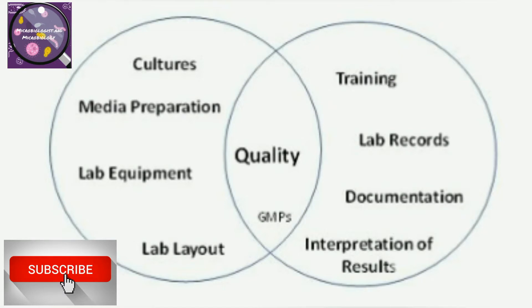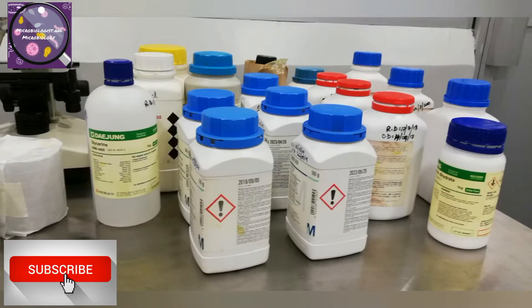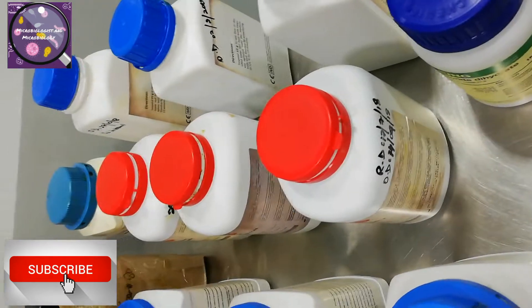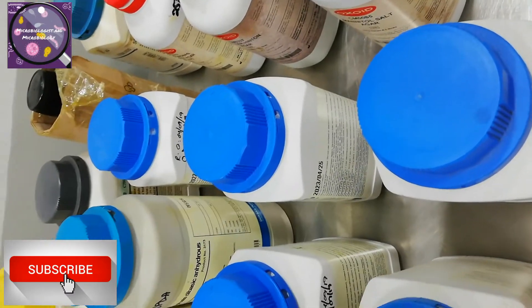Here is a quality chart for your lab — for good laboratory practices or good manufacturing practices. First you have cultures with training; you must know media preparation, lab work, records maintenance of lab equipment and instruments, documentation of each test, and record of results, different layouts for laboratory work, result interpretation, and corrective actions if required.